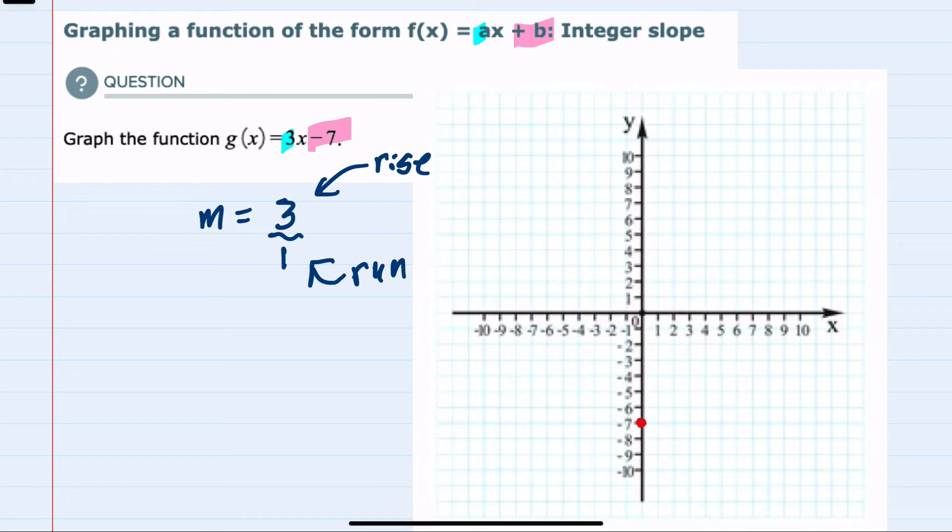I can now move back to the graph, and from the point we already have at the y-intercept of -7, I can rise 3 (so go up 1, 2, 3), and then our run is 1, so move to the right 1.